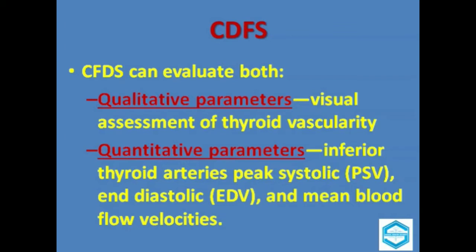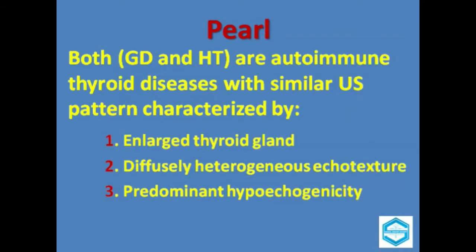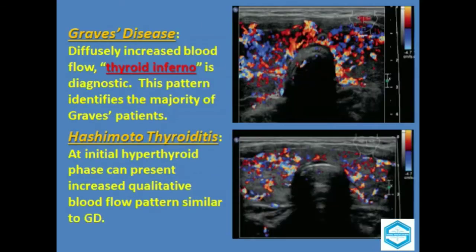Quantitative parameters we can measure include the inferior thyroid arteries' peak systolic velocities, diastolic velocities, and also the mean blood flow velocities. An important pearl: both Graves' disease and Hashimoto's thyroiditis are autoimmune thyroid diseases with similar ultrasound patterns, characterized by enlarged thyroid gland, diffuse heterogeneous echotexture, and predominantly hypoechogenicity.